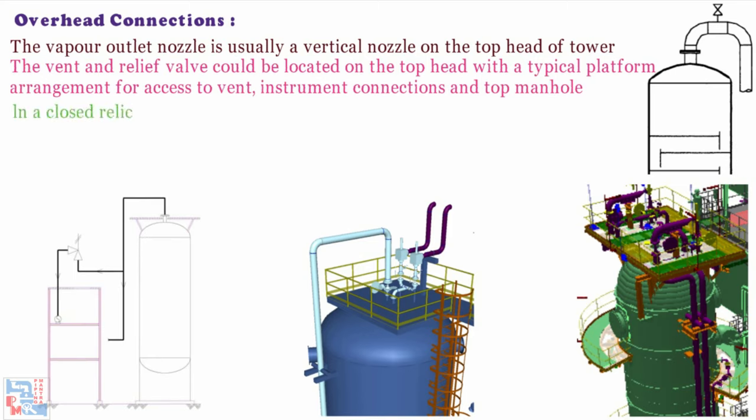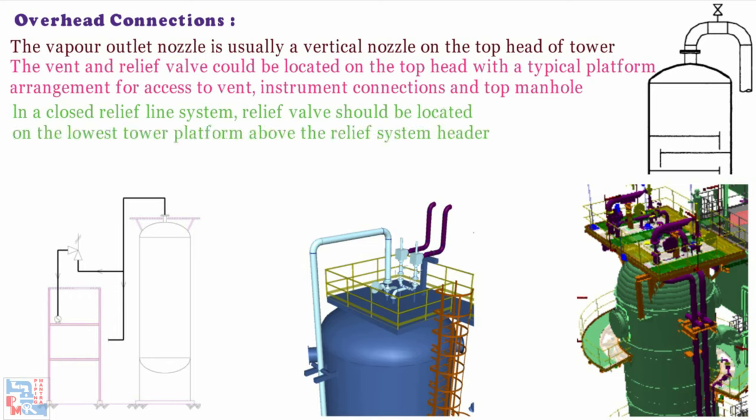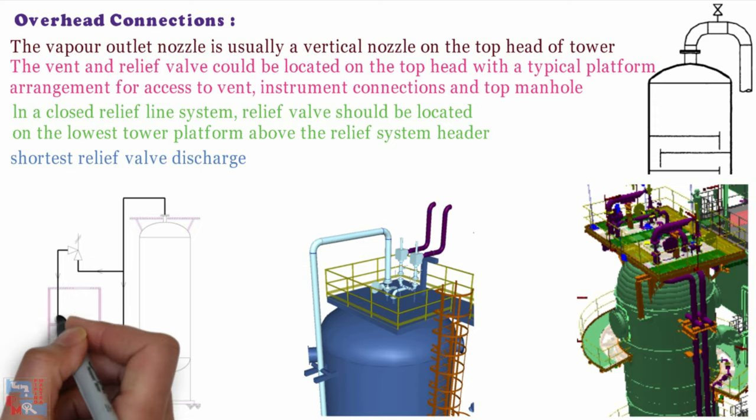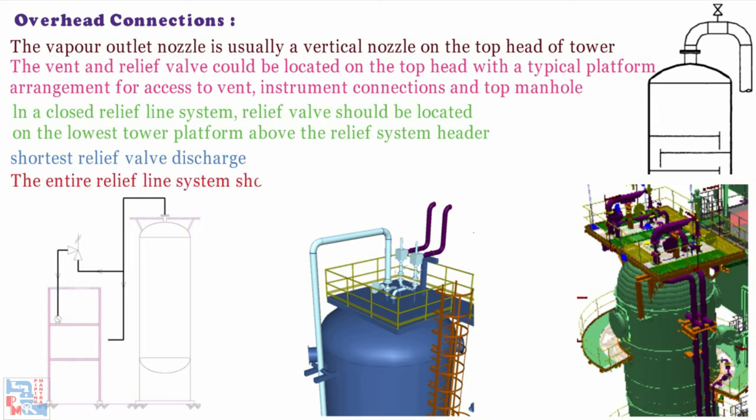In a closed relief line system, relief wall should be located on the lowest tower platform above the relief system header. This will result in the shortest relief wall discharge leads. The entire relief line system should be self-draining.